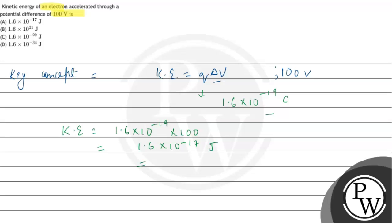So this will be the kinetic energy of an electron which we will accelerate from a potential difference of 100 volt. So the correct option will be option A.